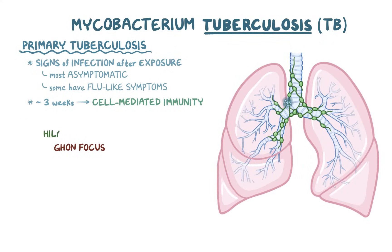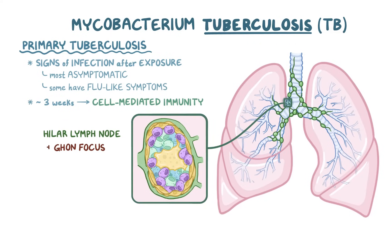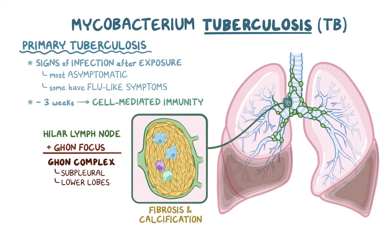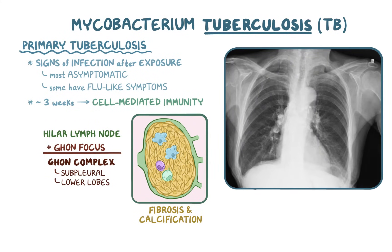TB also gets to the hilar lymph nodes, either carried over by immune cells through the lymph or by direct extension of the Ghon focus infection, and causes caseation there as well. Together, this caseating tissue and associated lymph node make up the characteristic Ghon complex. Ghon complexes are usually subpleural and occur in the lower lobes of the lungs. The tissue encapsulated by the granuloma undergoes fibrosis and often calcification, producing scar tissue that can be seen on X-ray. This calcified Ghon complex is called a Ranke complex.